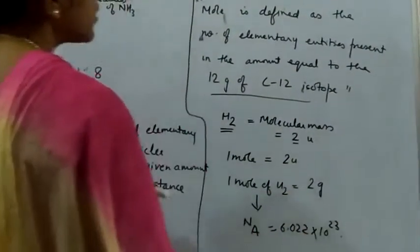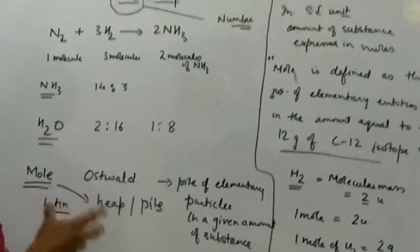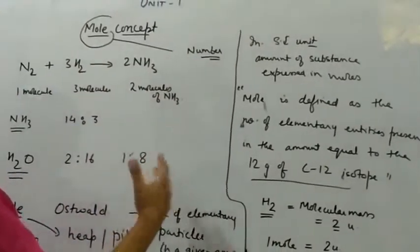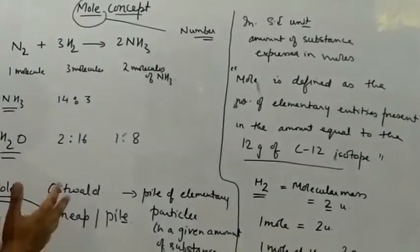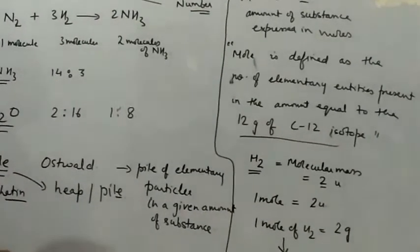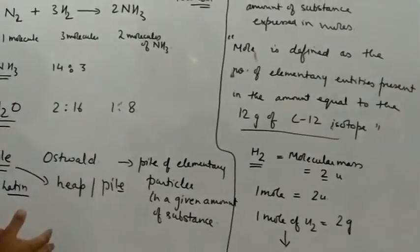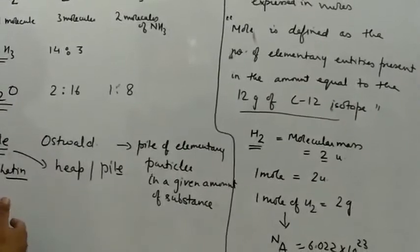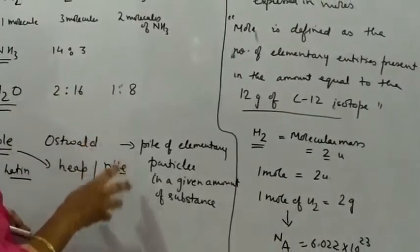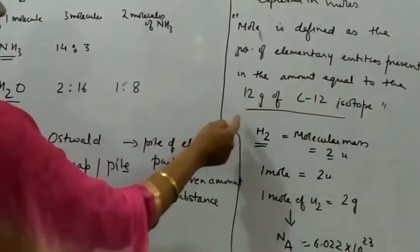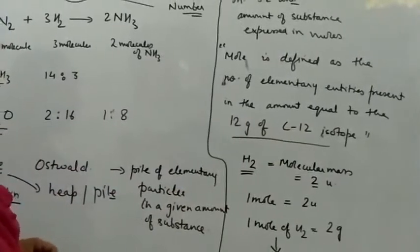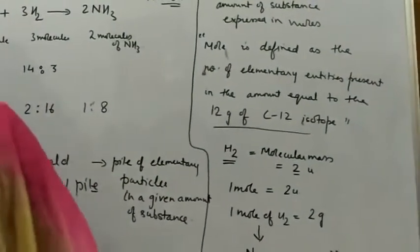So Avogadro's number gives us the count of entities in one mole. A mole is actually a number or a counting quantity, and it has been related with the amount of substance as an SI unit. Since atoms are very very small, it is not possible to count them in a given sample. For our convenience, the word 'mole' is introduced, which relates a given amount of substance to its atomic mass or molecular mass, equivalent to the 12 grams of carbon-12 isotope.